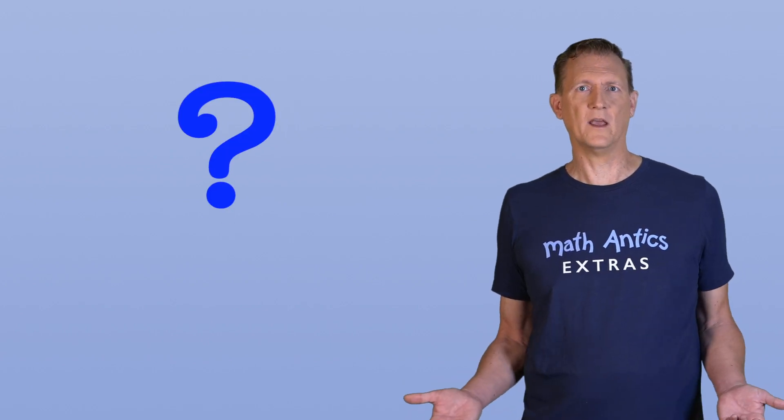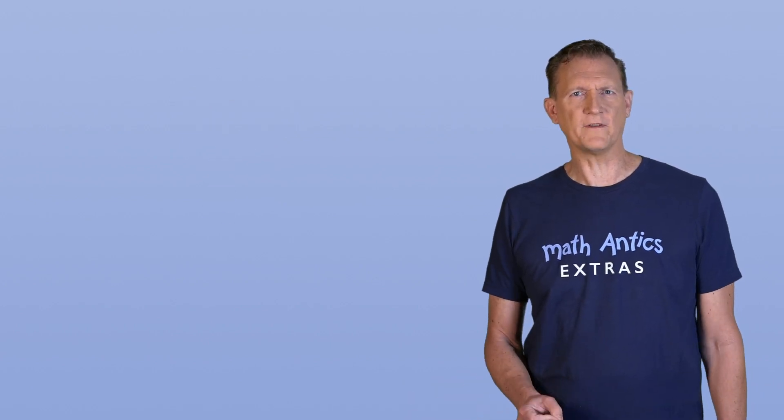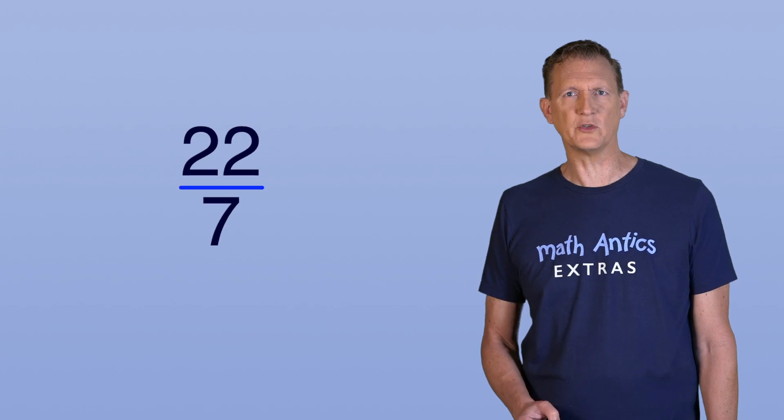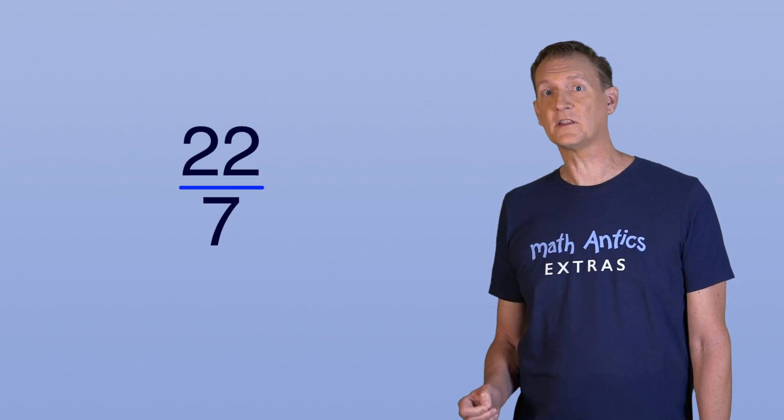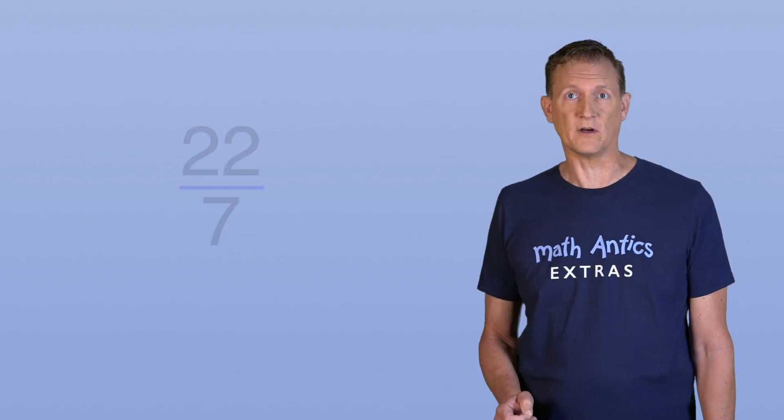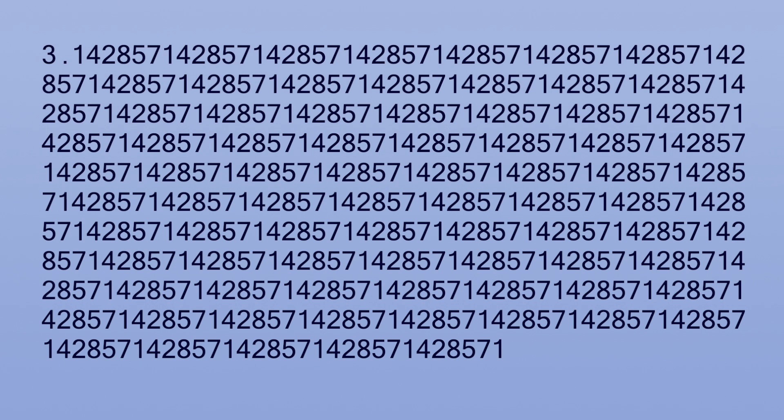So, if that's not what's meant by the decimal digits not repeating, then what is? Well, remember that fraction that's often used to approximate pi, 22 over 7? Let's look at the first 500 digits of that number. Notice how the sequence 142857 keeps repeating? Well, it keeps on going like this, repeating that same sequence, forever.